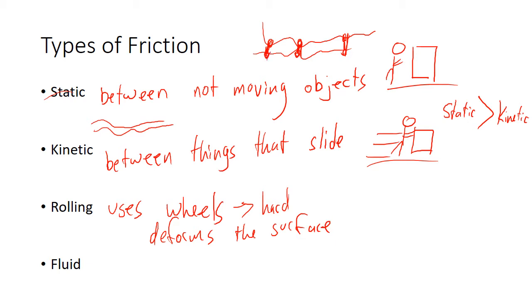Remember we talked about how the two surfaces kind of mash against each other. When you have a wheel rolling, it's going to kind of pancake the surface out, which makes rolling much less than kinetic. Rolling is going to be the least of these.